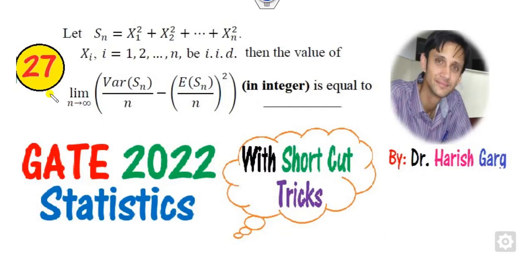Hello students, welcome to the next lecture on the GATE 2022 examination. Today we will discuss equation number 27 related to normal distribution or the sum of them. That's very simple, we will try to solve this within one minute, it's a very simple one.